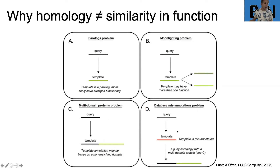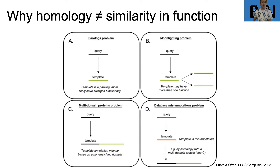Lastly, and very importantly, our databases are filled with incorrect annotations. What happens is your query gets a template, but that template was historically misassigned — maybe because of one of these other problems — translating back a functionality that doesn't belong to it. So you have the multi-domain problem influencing what your template's assigned to, and then your query matches the template and inherits that wrong annotation. This database rot is very common, and institutions like NCBI are constantly trying to manage it through large annotation sweeps, but it's very hard to police entirely.